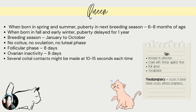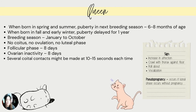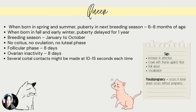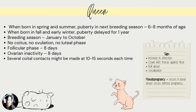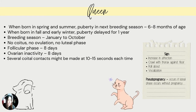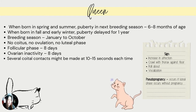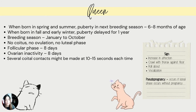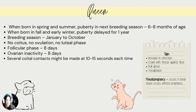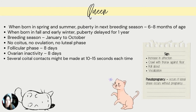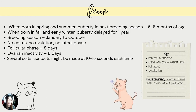For the queen, when a kitten is born in spring and summer, puberty in the next breeding season is at 6 to 8 months of age. When the kitten is born in fall and early winter, puberty is delayed for 1 year. Breeding season for queen is January to October. No coitus means no ovulation and no luteal phase. The follicular phase and ovarian inactivity is 8 days. Several coital contacts might be made at 10 to 15 seconds each time. During the first contact, 4 or 5 intromissions with ejaculation might occur. Signs of estrus of a queen include increased affection, crawling with the thorax against the floor, and vocalization. Pseudopregnancy occurs if the luteal phase occurs without pregnancy.